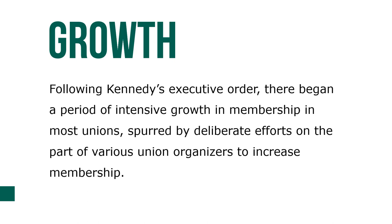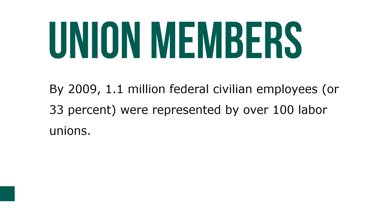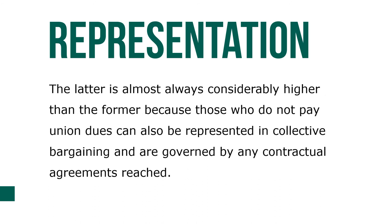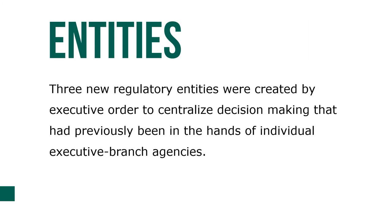Following Kennedy's executive order, there began a period of intensive growth in membership of most unions, spurred by deliberate efforts on the part of various union organizers to increase membership. By 2009, 1.1 million federal civilian employees, or 33%, were represented by over a hundred labor unions. The number of union members is not the same as the number of employees having union representation — the latter is almost always considerably higher, because those who do not pay union dues can also be represented in collective bargaining and are governed by any contractual agreements that are reached.